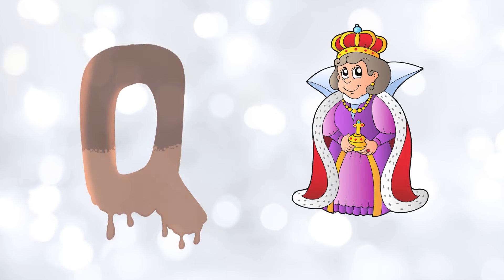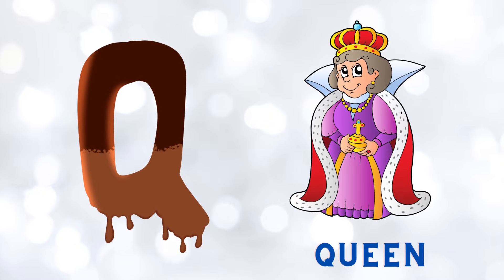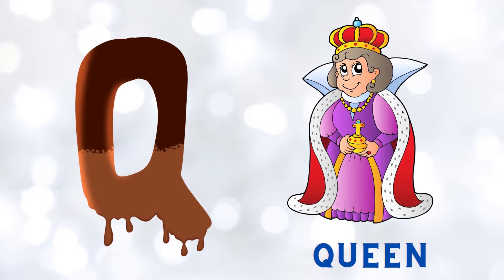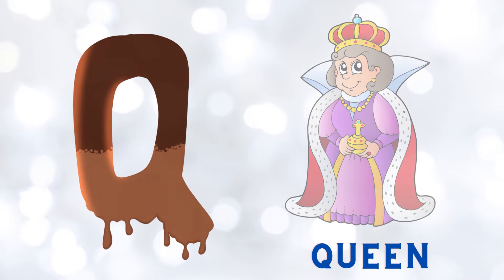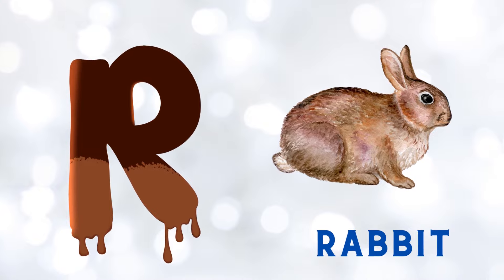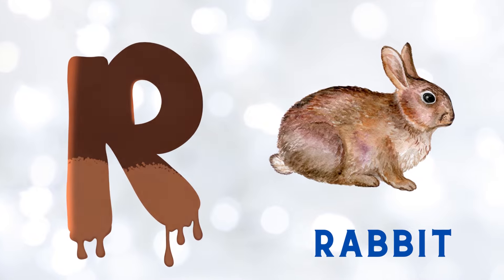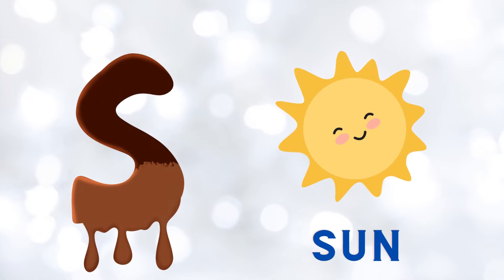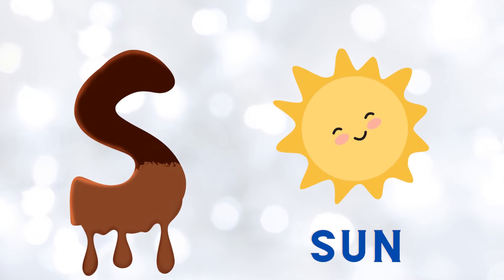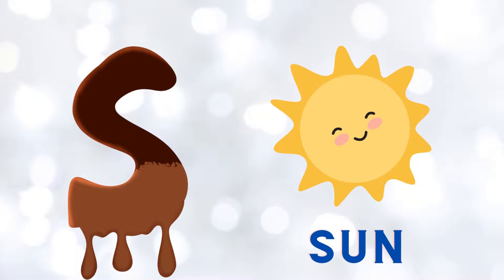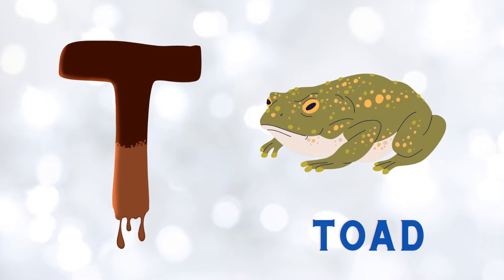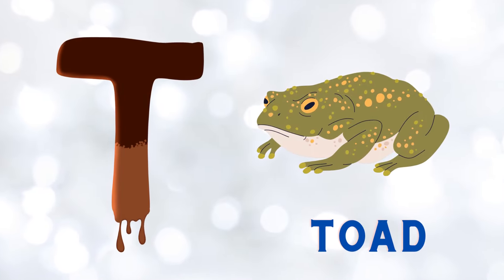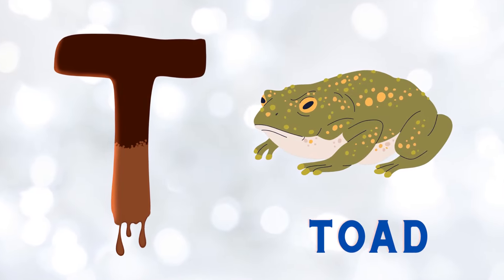Q is for queen, qu-qu-queen. R is for rabbit, r-r-rabbit. S is for sun, s-s-sun. T is for toad, t-t-toad.